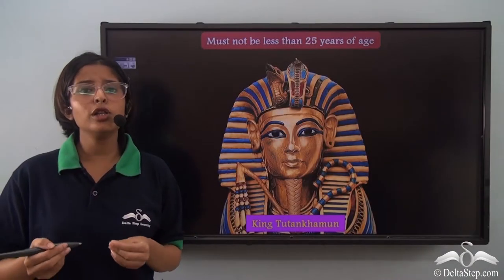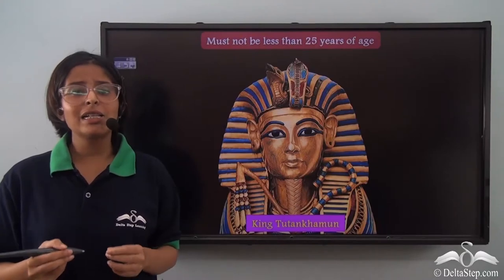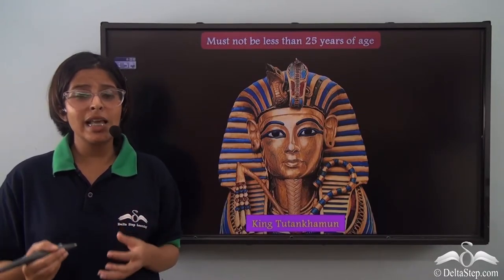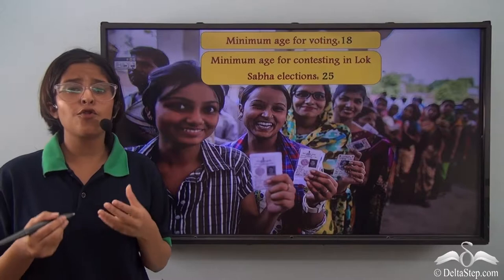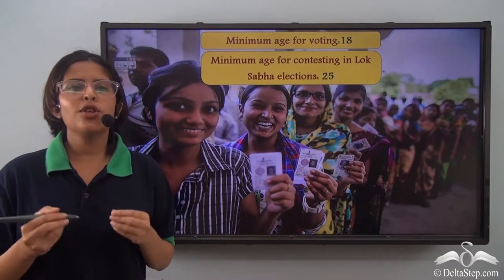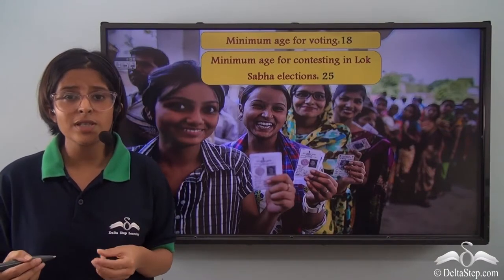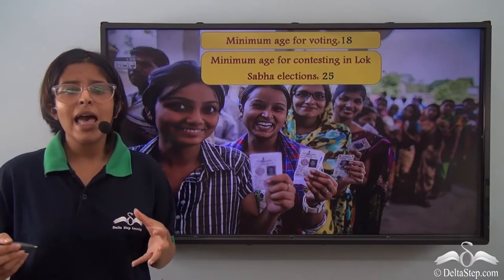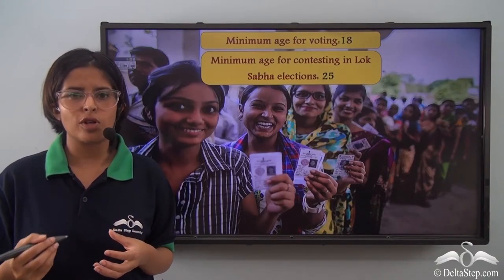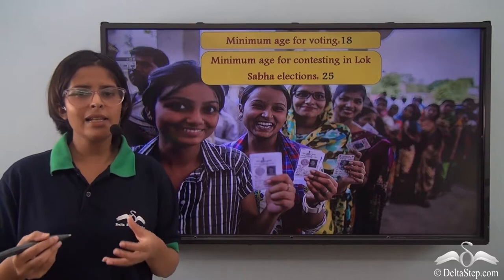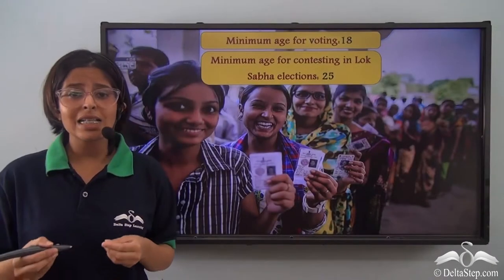To contest for Lok Sabha elections you have to be at least 25 years of age, ensuring you have the maturity to take on the responsibilities of the post. The minimum age for voting is 18 years in India, but the framers of the eligibility criteria believed one needs more time — staying in the voting zone, understanding the process of elections — before taking on the responsibilities of a Lok Sabha member.